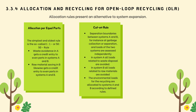Rule 2, the cut-off rule, provides exactly defined separation boundaries between systems A and B—for instance at garbage collection or separation—and the loads of the two systems are assessed independently. In system A, all loads related to waste disposal are avoided; the recycled portion is not assigned as waste. In system B, all loads related to raw material extraction and resource consumption are avoided. These loads are fully allocated to system A. The environmental loads for recycling are allocated to systems A and B according to defined rules. In the sense of a circular economy, the rule rewards both systems.